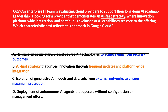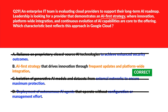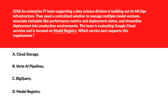An AI-first strategy aligns with continuous innovation and broad platform integration — let's keep Option B. Option C says isolation of generative AI models and datasets from external networks to ensure maximum protection. This won't help with the use case — out. Option D says deployment of autonomous AI agents that operate without configuration or management effort. This won't support continuous evaluation of AI capabilities — wrong. Lock Option B as the correct choice.